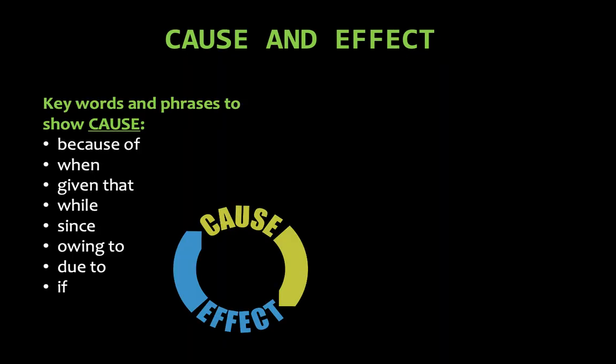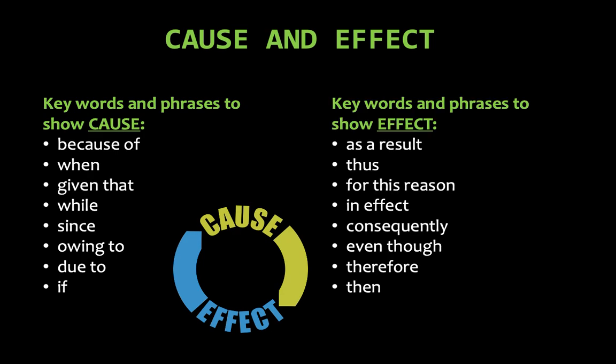Here are some great keywords and phrases that you might see with a cause and effect article: because of, when, while, since, owing to, if, as a result, thus, for this reason, in effect, consequently, even though, therefore, and then.